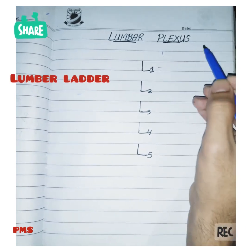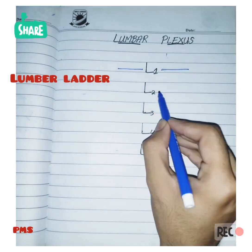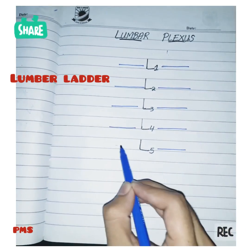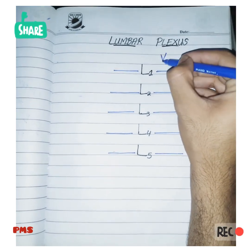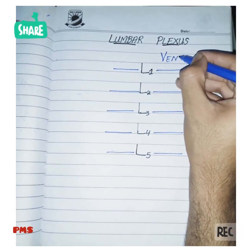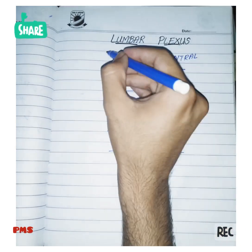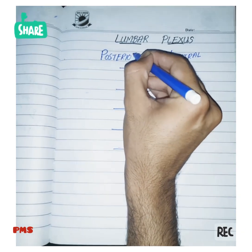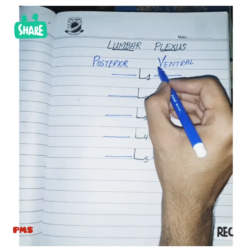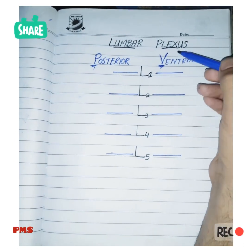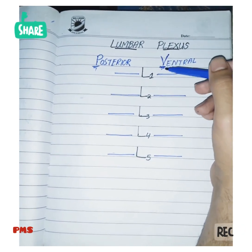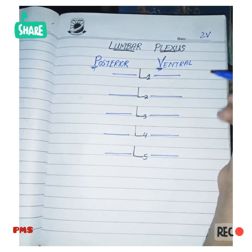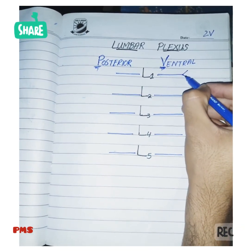What you can do is just draw a lumbar ladder, just like this. Draw lines to make a lumbar ladder. This is the ventral division and this is the dorsal or posterior division. As highlighted, the 'V' in ventral division requires a V shape in it, so you have to draw two V's in the ventral division. The first V is from the L1 segment.